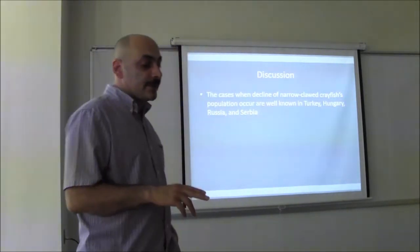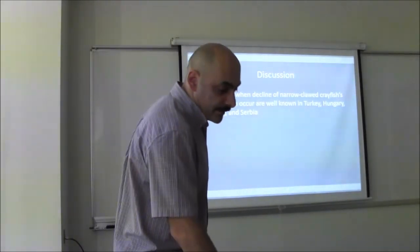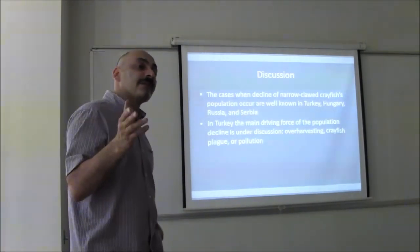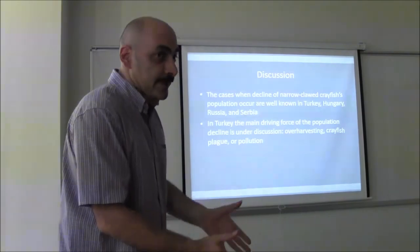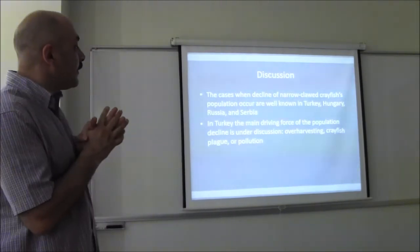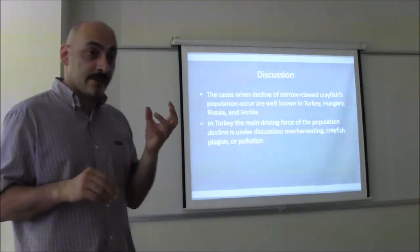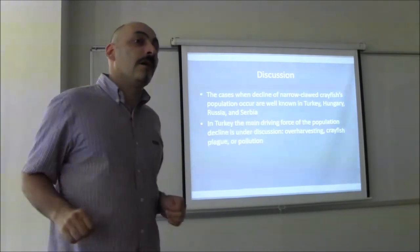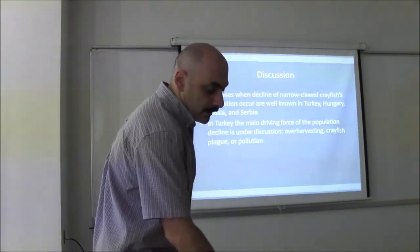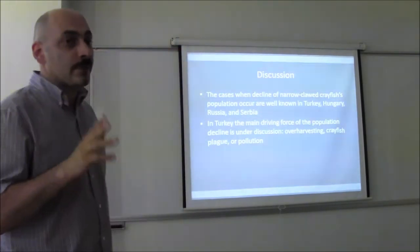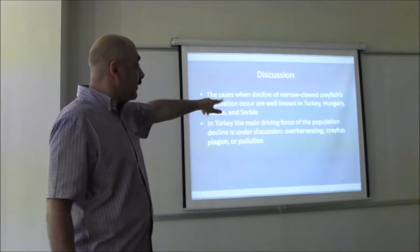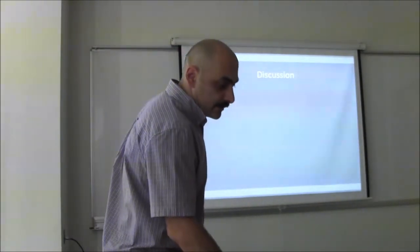Such cases have been reported for several countries like Turkey, Hungary, Russia, Serbia. For example in Turkey, it is a long discussion. Some scientists think that it is overharvesting, like fisheries catch more than crayfish can reproduce. Other scientists think that it might be crayfish plague. This is a disease that kills a big number of crayfishes. It is crayfish specific disease, fungal disease, that mass killing the crayfishes. Another reason, supposed reason, was pollution. But crayfish plague cases were reported from Turkey and overharvesting also was reported. So probably the combination of these two caused that significant decline.